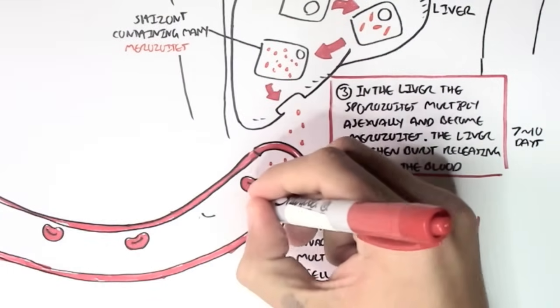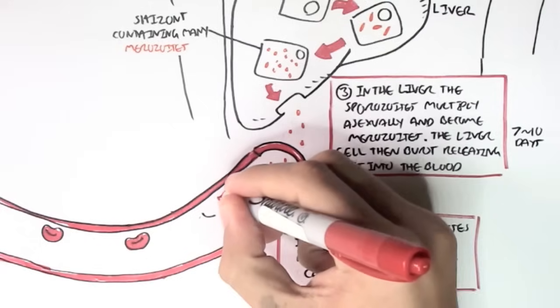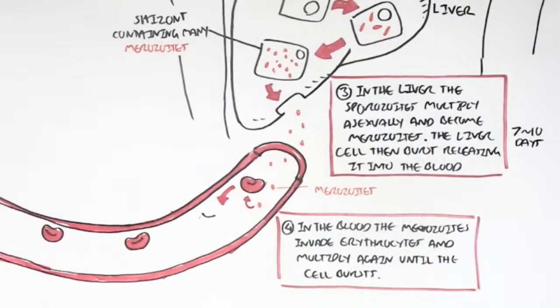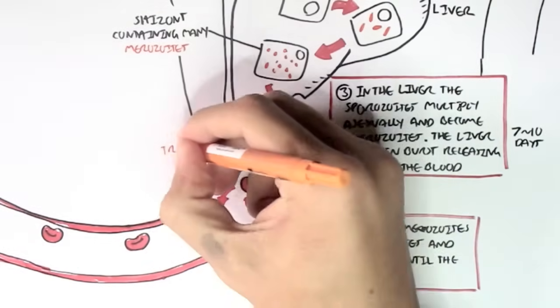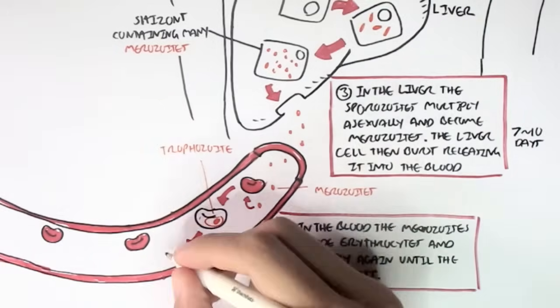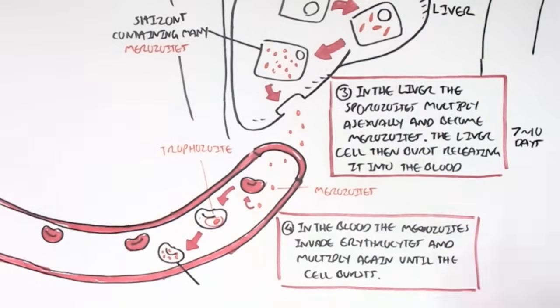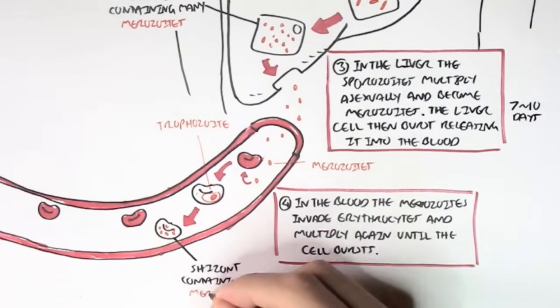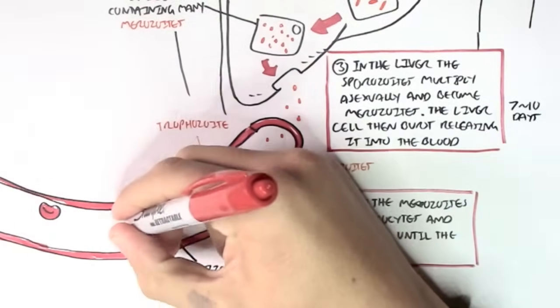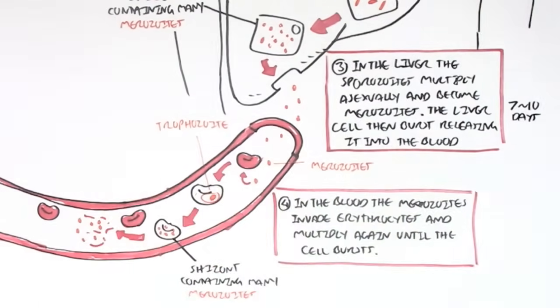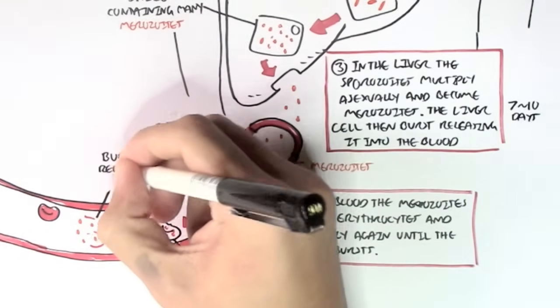So, here the merozoite will invade this particular red blood cell. The merozoite within the red blood cell will form into a ring-like structure and then a trophozoite. And from this trophozoite stage, it will multiply asexually to form many, many more merozoites. With many more merozoites, the red blood cell will just burst, releasing all these merozoites again back into the bloodstream.